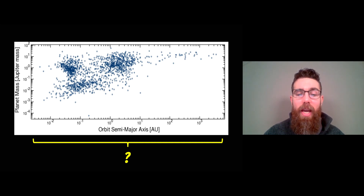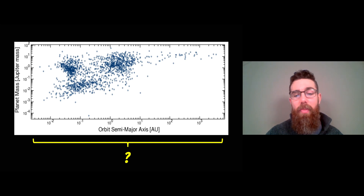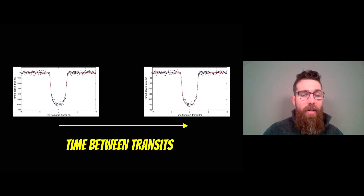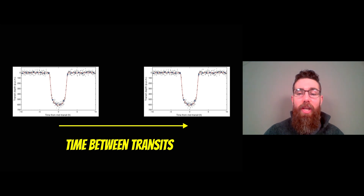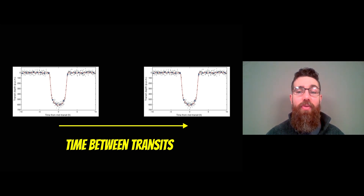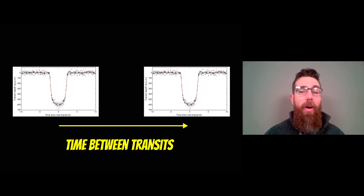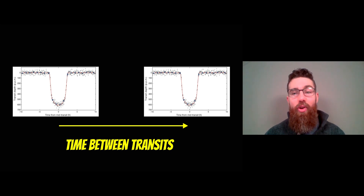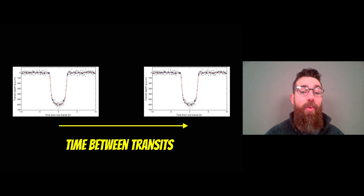However, how do we get that semi-major axis, which relates to its orbit? The easy thing really is the period. We can calculate the orbital period by measuring the time between the different transits. As the planet passes in front of the star it blocks out some of the light, which you can see by this U-shaped transit. All we've got to do is wait for it to come back round again and detect the next one — the time between the transits gives us our orbital period.